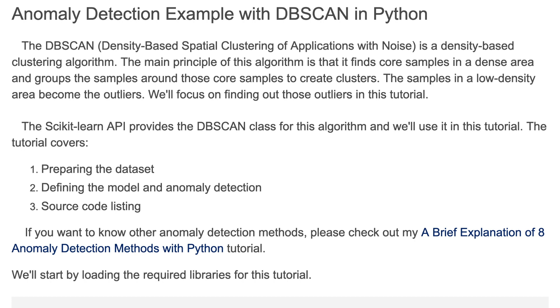The DBSCAN density-based spatial clustering of applications with noise is a density-based clustering algorithm. The main principle of this algorithm is that it finds core samples in a dense area and groups the samples around those core samples to create clusters. The samples in a low density area become the outliers. We'll focus on finding out those outliers in this tutorial.